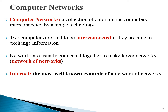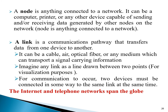A computer network is a collection of autonomous computers interconnected by a single technology. Two computers are said to be interconnected if they are able to share information with each other. Networks are usually connected together to make a larger network, called a network of networks. This term — network of networks — refers to the internet. The internet is the most well-known example of a network of networks.